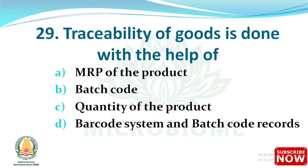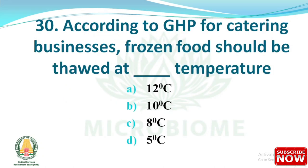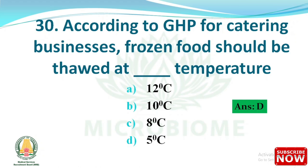Next question: traceability of goods is done with the help of — options: MRP of the product, batch code, quantity of the product, or barcode system and batch code records. The right answer is option D, barcode system and batch code records. Next question: according to GHP (Good Hygienic Practices), for catering businesses, frozen food should be thawed at a maximum temperature of — options: 12°C, 10°C, 8°C, 5°C. The right answer is option D, 5 degrees Celsius.